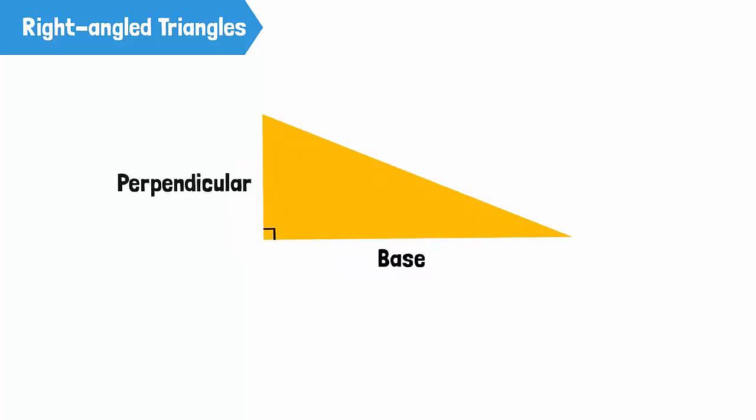This side will be called the base and that side will become the perpendicular. So it's really all about which side the triangle stands on. This is why the vertical side, or the perpendicular, is also sometimes called the altitude of the triangle. Altitude is just a fancy name for the height of the triangle.